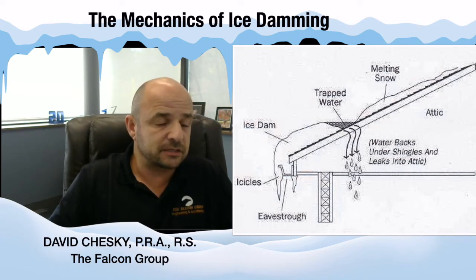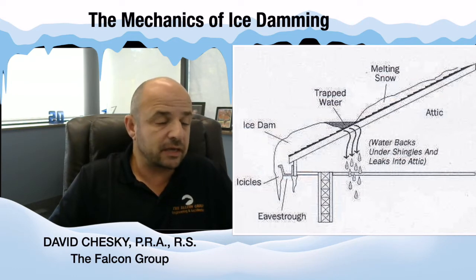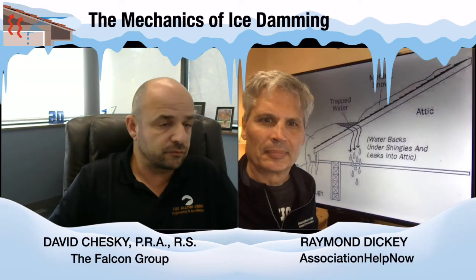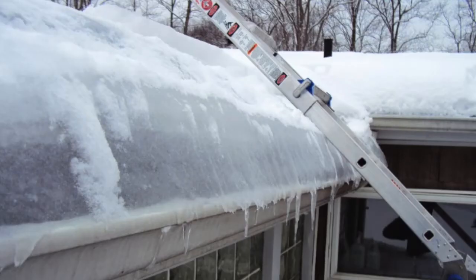That eave or overhang is unconditioned space — there's no living space under the eave — and because it's unconditioned, it's cold and that melting snow refreezes. It causes those typical icicle structures that hang over the gutters, or on the gutters, and extend beyond them. In really severe winters, we see very bad ice forming over the gutters.